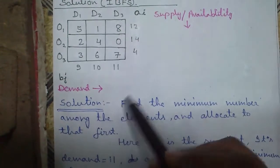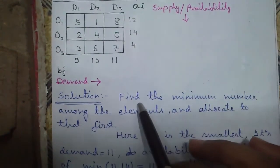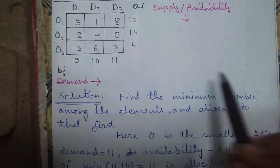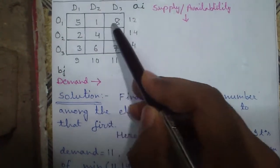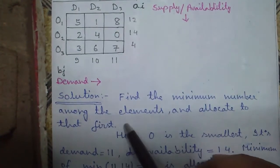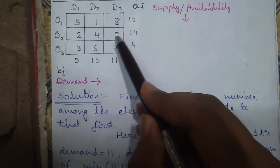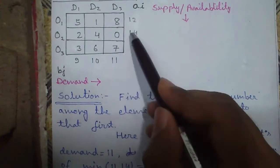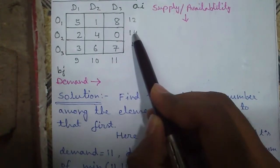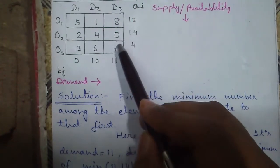So let's proceed to the solution. First find the minimum number among all the elements inside the boxes and allocate to that first. So minimum element is 0 and again 0, the total demand is 11 units and supply is 14 units. So you can allocate maximum 11 to this location.